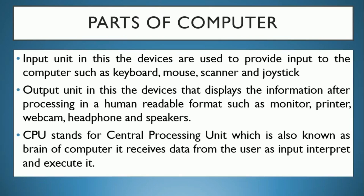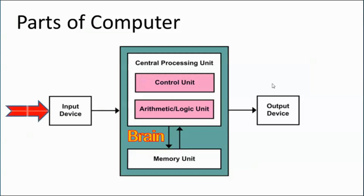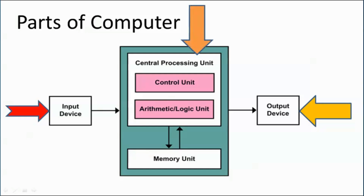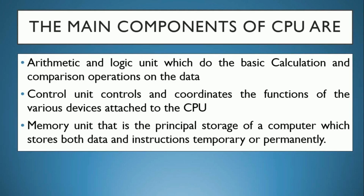The CPU — central processing unit — is called the brain of the computer because it controls everything, just like our brain controls us. The main components of the CPU are the Arithmetic and Logic Unit (ALU), the Control Unit, and the Memory Unit. The ALU does calculations. The Control Unit controls the whole functioning of devices — for example, if the keyboard or mouse is not working, it shows us where the problem is.